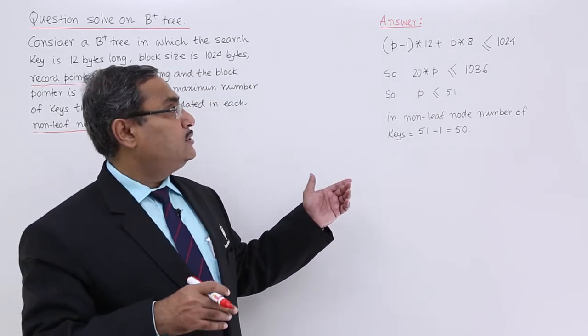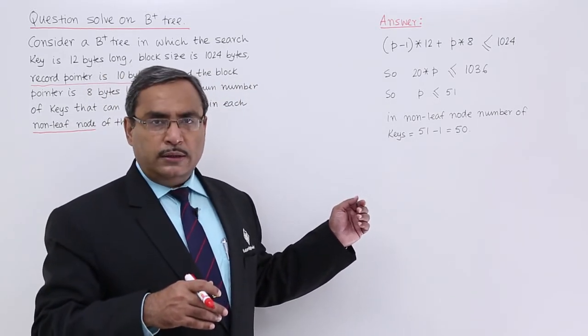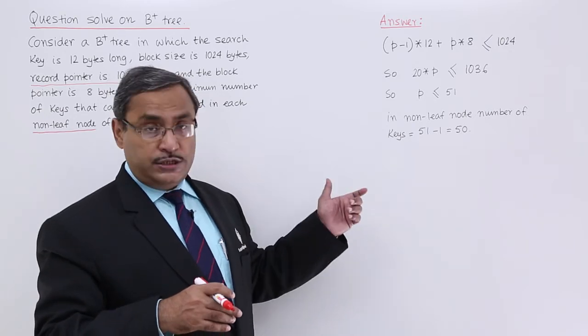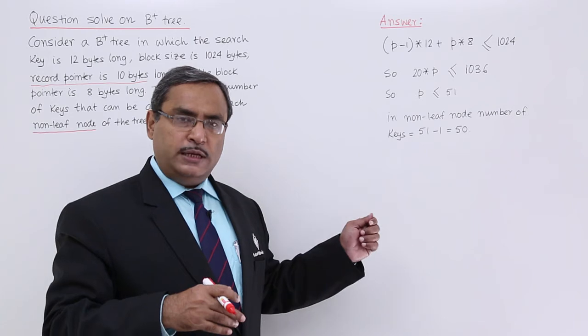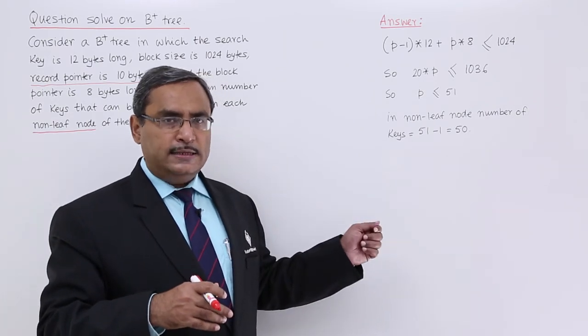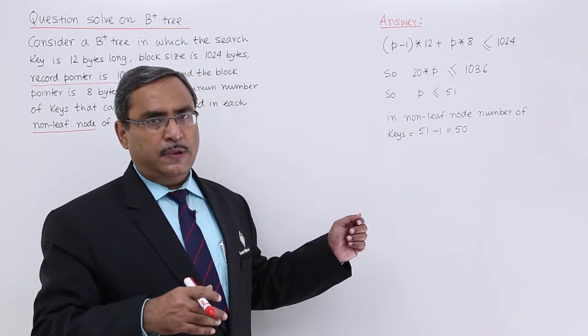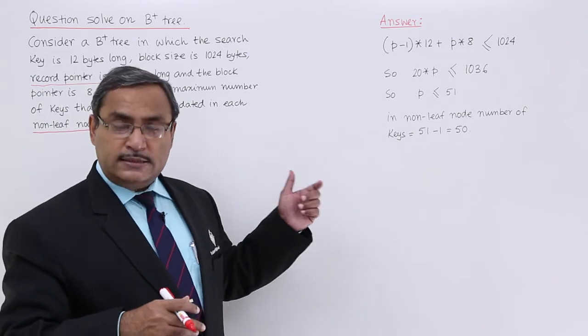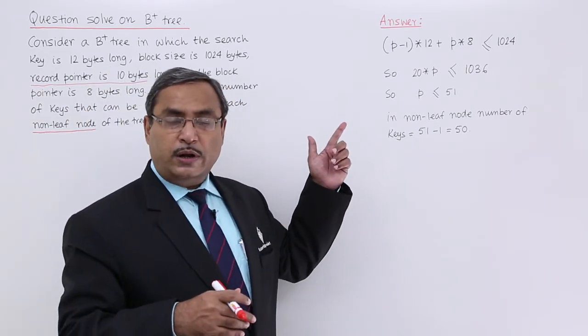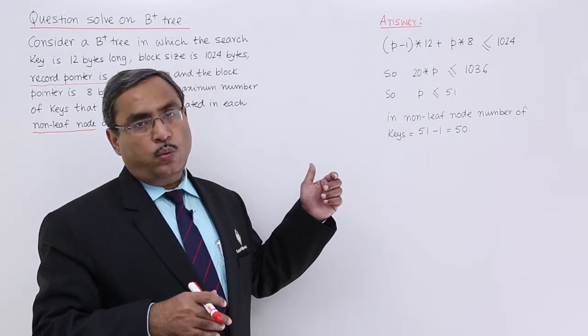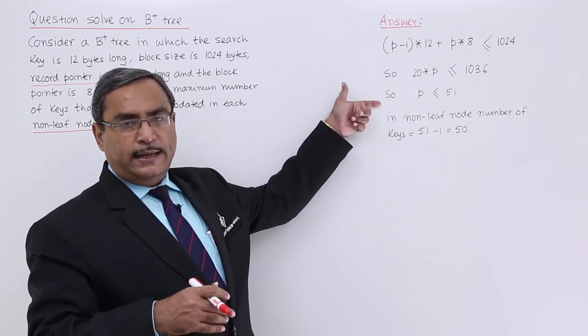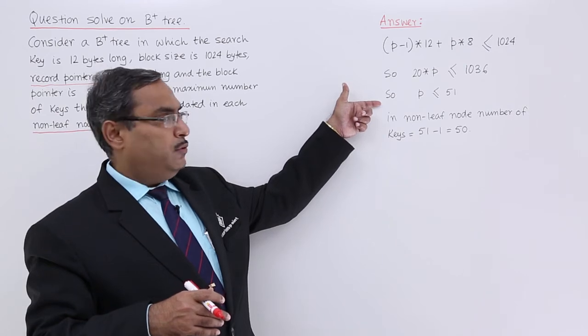We can do the solution in this way: P minus 1 into 12, that is the key field size, plus P into 8 - P is the pointer field and 8 bytes is the respective length - that sum must be less than equal to 1024. So if you go for the simplification, you are getting P must be less than equal to 51.